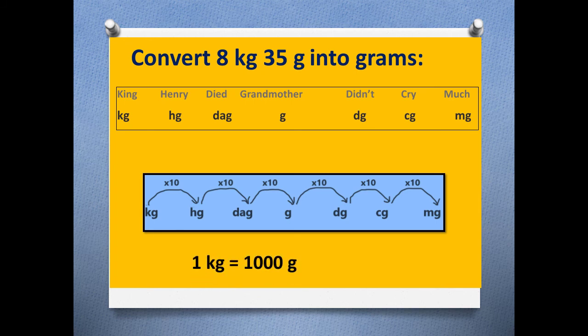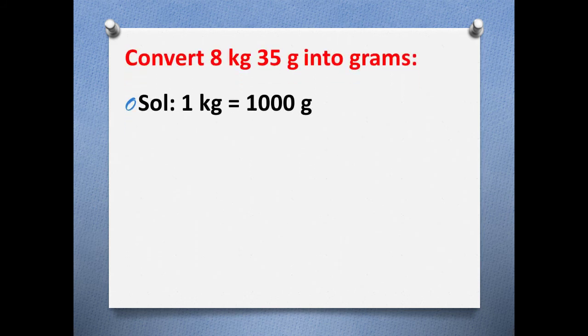We can write it as 1 kg is equal to 1000 grams. So now to solve this question, what we will do first, we will mention that 1 kg has 1000 grams. In the second step we will consider 8 kg 35 grams and split it as 8 kg plus 35 grams.